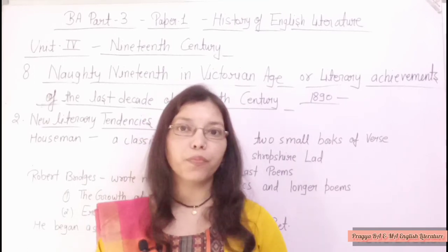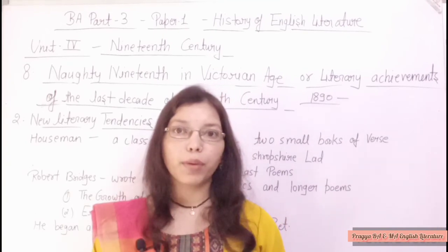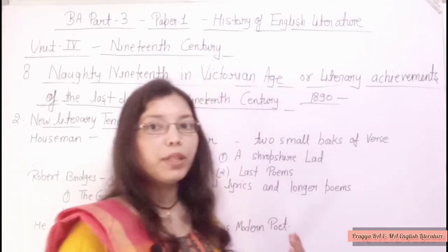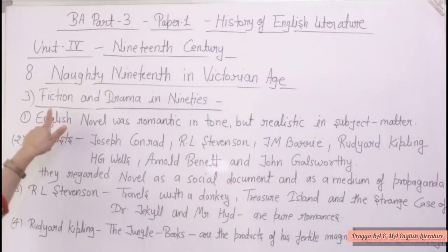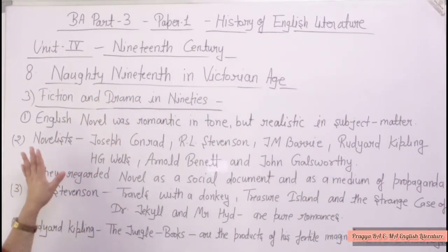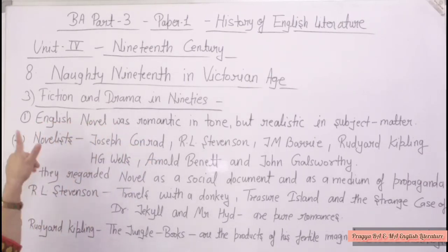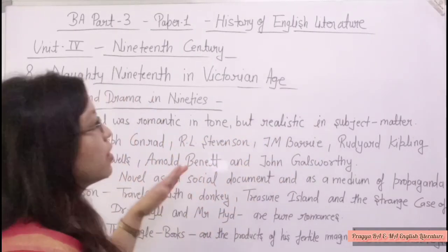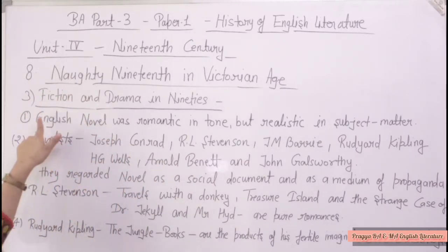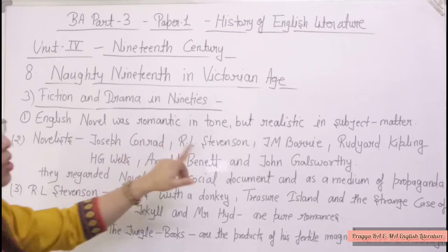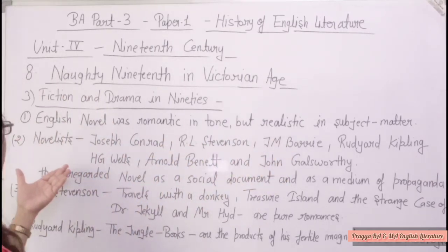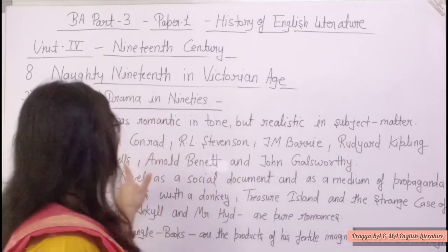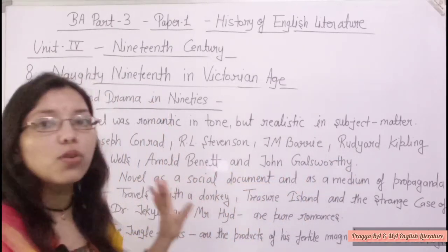Now we will know about drama and fiction in the Naughty Nineties. The English novel was romantic in tone but realistic in subject matter. Novelists of this period include Joseph Conrad, R.L. Stevenson, J.M. Barrie, Rudyard Kipling, Arnold Bennett, and John Galsworthy. They regarded the novel as a social document and as a medium of propaganda.